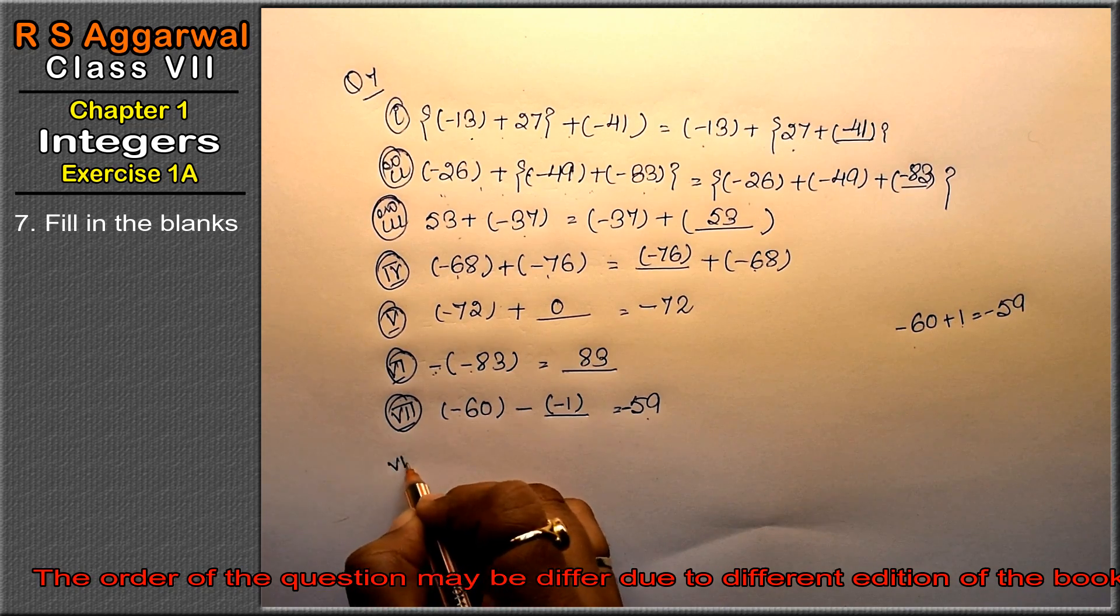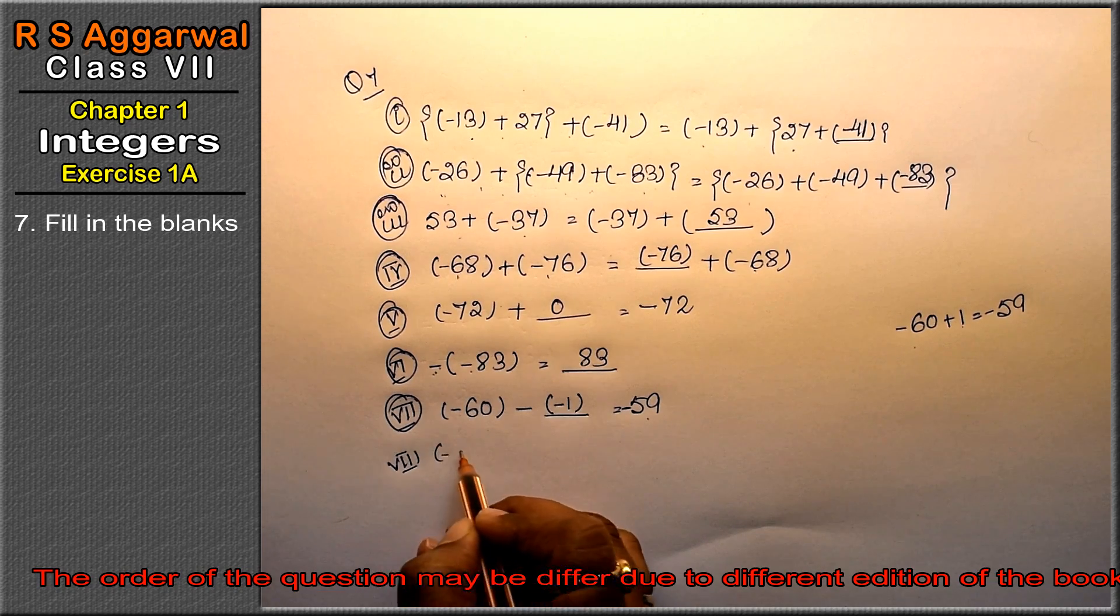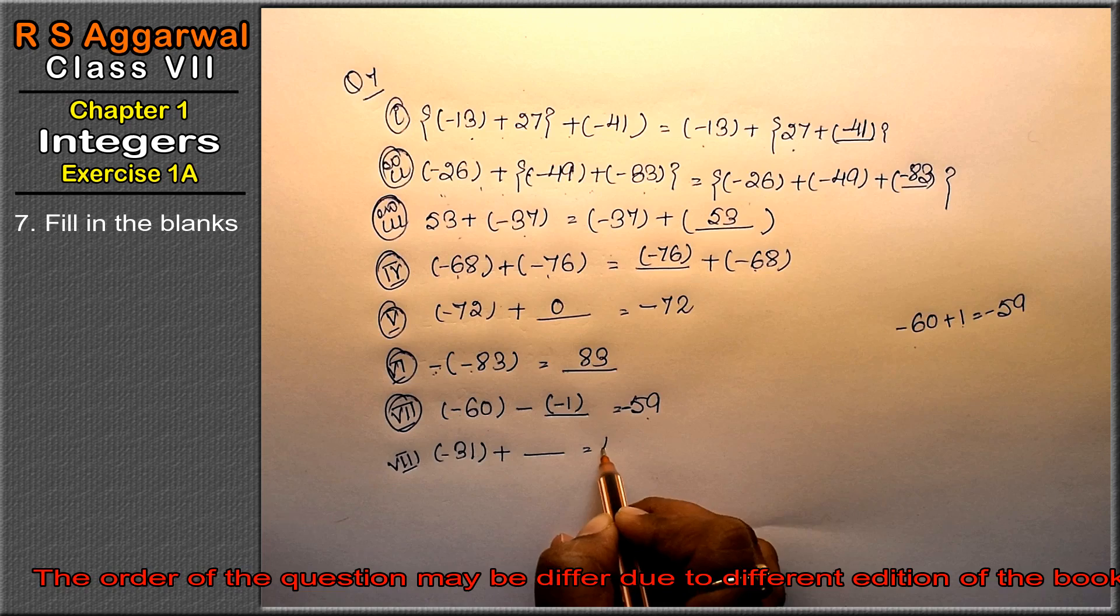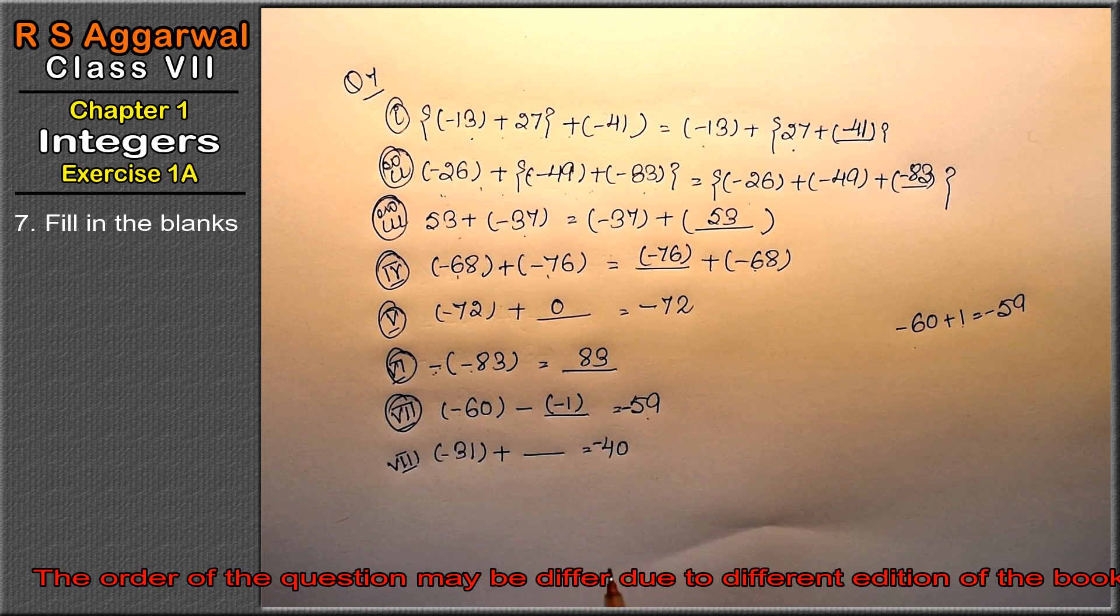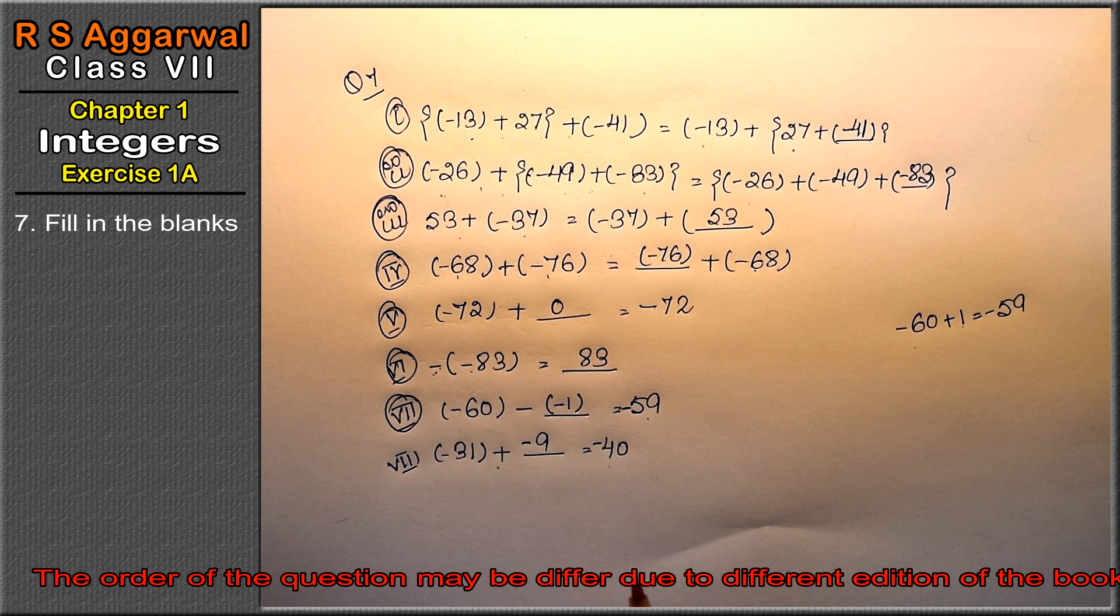Eighth part: minus 31 plus dash equals minus 49. So what do I add to minus 31? It should all be the same sign. Minus is there, so the answer is minus.